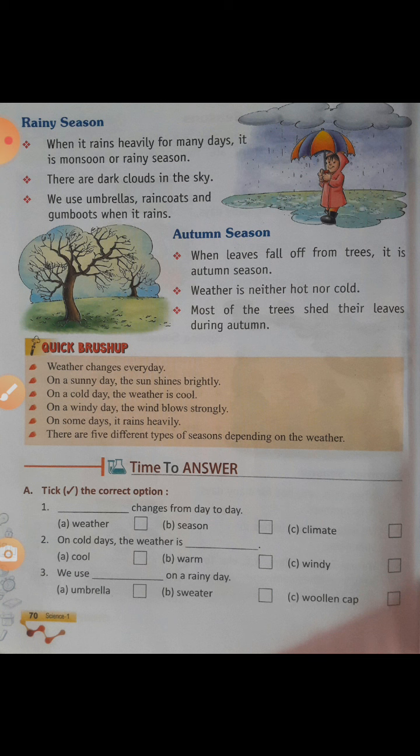We use umbrellas, raincoats, and gumboots when it rains. Autumn season — when leaves fall off from trees, it is autumn season. The weather is neither hot nor cold. Most of the trees shed their leaves during autumn.